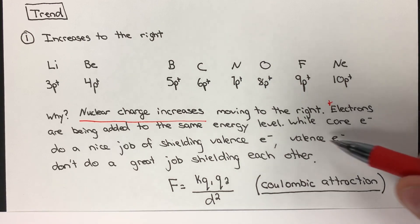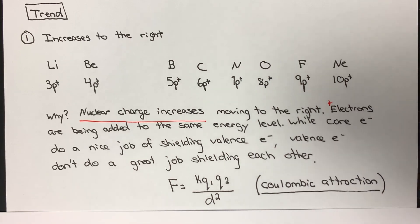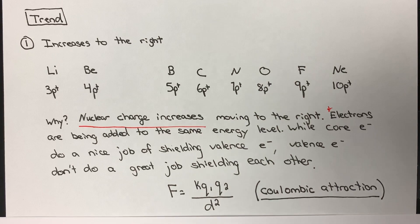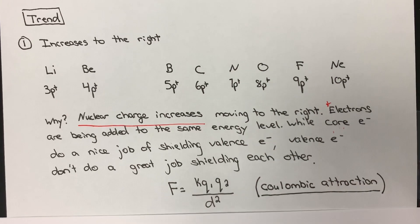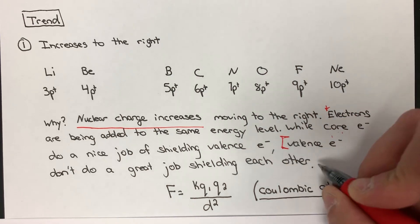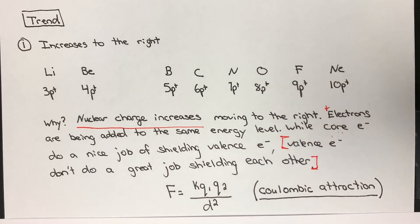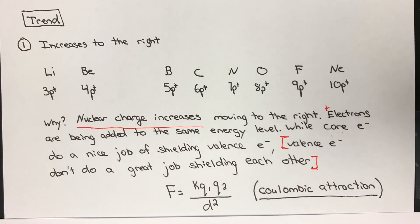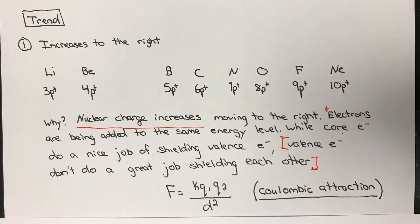As we move left to right, electrons are being added to the same energy level. If you're thinking about shielding — core electrons do a really nice job of shielding valence electrons, undeniably. That being said, valence electrons don't do a great job of shielding each other. So essentially, this increasing nuclear charge is going to make it harder and harder to remove an electron, thereby increasing ionization energy.